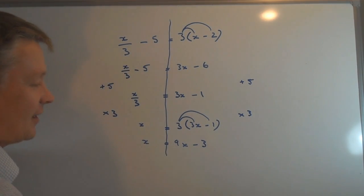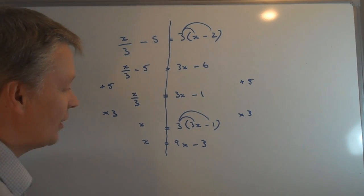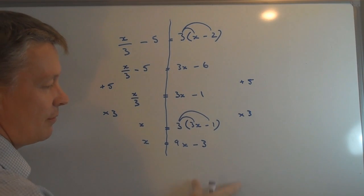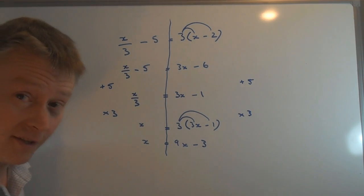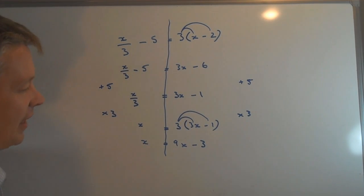On this side I've got minus 3 and 9x and x. There's a couple of things I could do, but generally speaking I want to make sure that I end up with the numbers on one side and the x's on the other. So what I'm going to do is take 9x from this side.